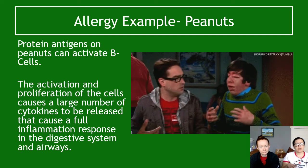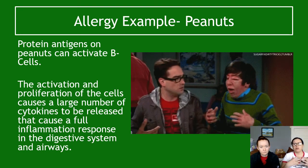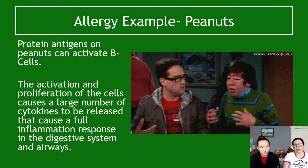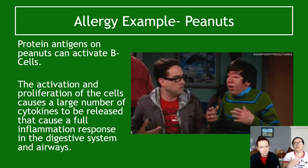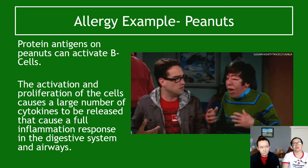For example, protein antigens on peanuts can activate B lymphocytes in some people, making them allergic to peanuts. The activation and proliferation of large numbers of B lymphocytes causes cytokine release, triggering a full inflammation response in the digestive system and airways. This results in massive inflammation around the throat, digestive system, lips and tongue. It's essentially a huge release of histamine caused by this overreaction of B cells to a completely harmless antigen on peanuts.